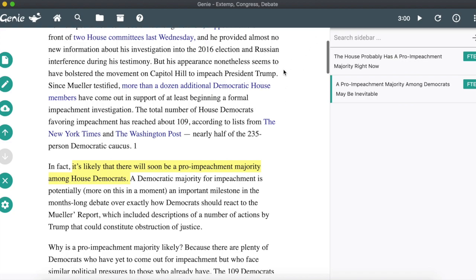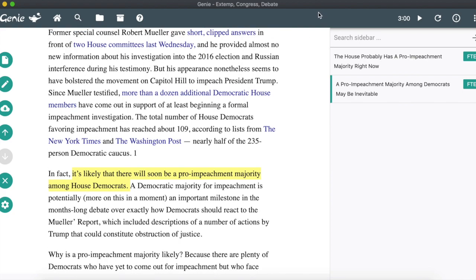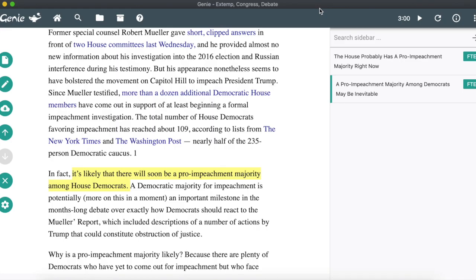But even if you don't have access to Extemp Genie this week, that is totally fine — you can find everything you need just with Google. That said, you're not just looking for any Google article. For extemp, you want credible news sources. The best publications our extempers rely on again and again are sources like The Economist, The New York Times, The Guardian, The Wall Street Journal, Washington Post, The LA Times, BBC, The Atlantic, Christian Science Monitor, and Reuters.